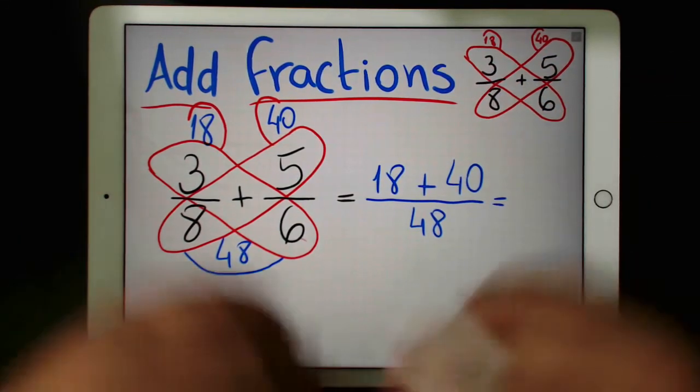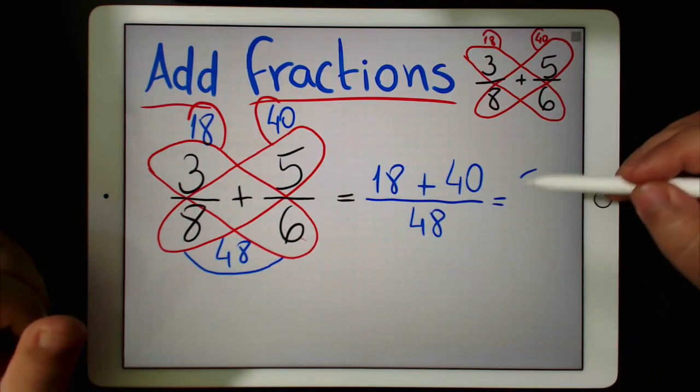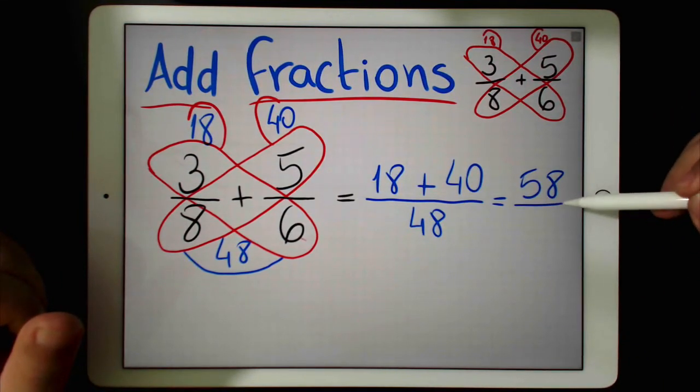Now it's pretty easy. 18 plus 40 is 58 over 48.